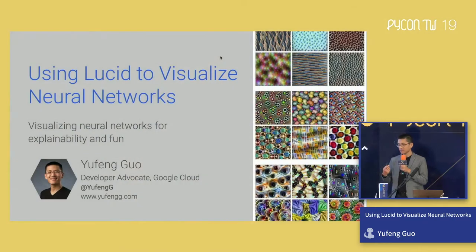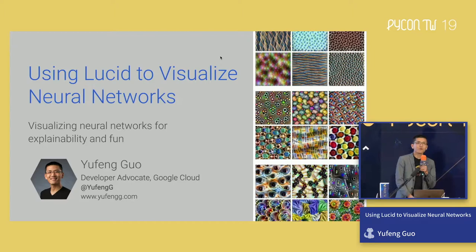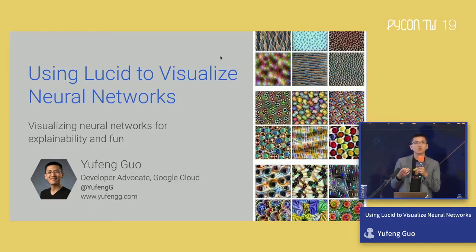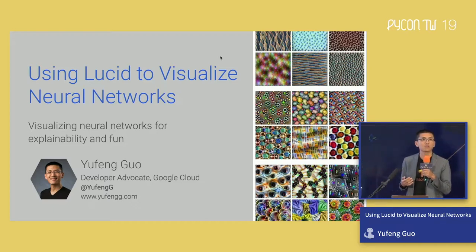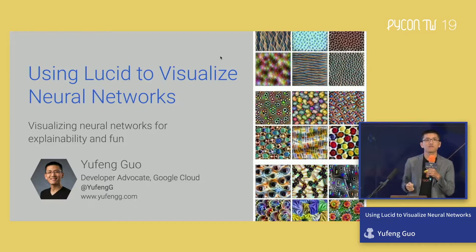Thanks a lot. Hi everyone, my name is Yui Fan and my clicker is currently not connecting to my laptop, so that's really nice. Today we're going to talk about visualizing neural networks and how to use that information to understand the predictions they're making and roughly the path they take — specifically with regard to images. We'll use an open source tool called Lucid, created by the Google Brain and TensorFlow teams.